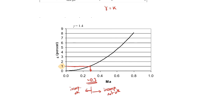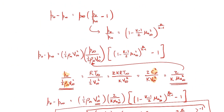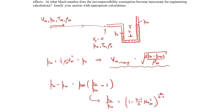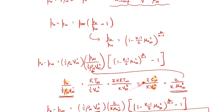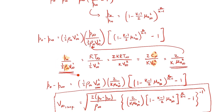Hopefully this makes sense. It's really more of a complicated algebra problem. Using the incompressible Bernoulli's equation to get V-infinity was straightforward; the compressible analysis is mostly about knowing what pieces to substitute in where. The hardest part is knowing to cast things in terms of the Mach number — but that's the key insight of the problem.